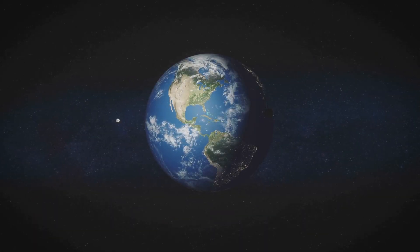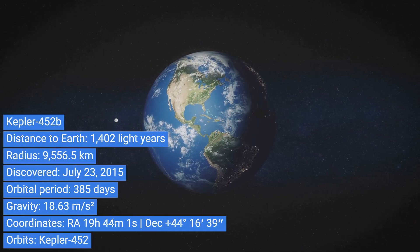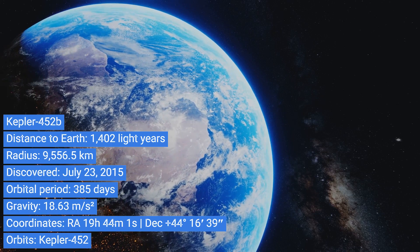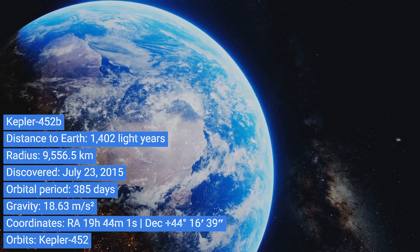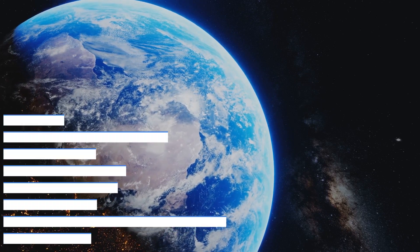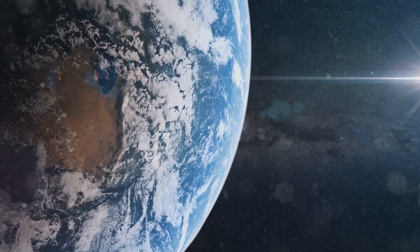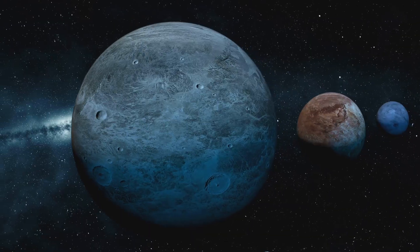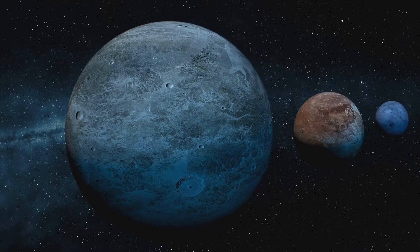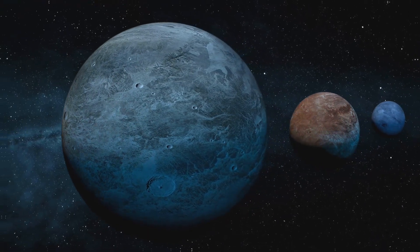Meet Kepler-452b, often referred to as Earth's older cousin. Nestled comfortably in the habitable zone of its star, it boasts a size comparable to Earth's. With an extended orbital period of 385 days, Kepler-452b, with its familiar traits, might just be the older wiser cousin Earth never knew it had.